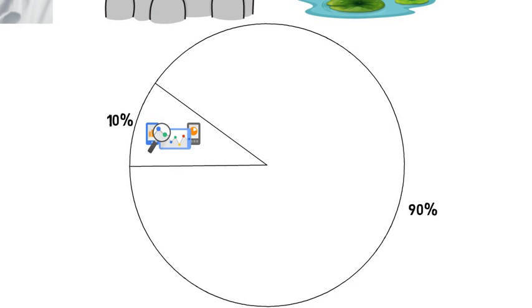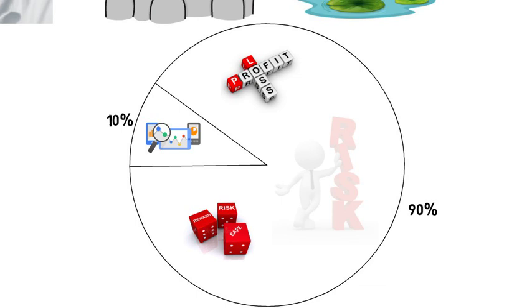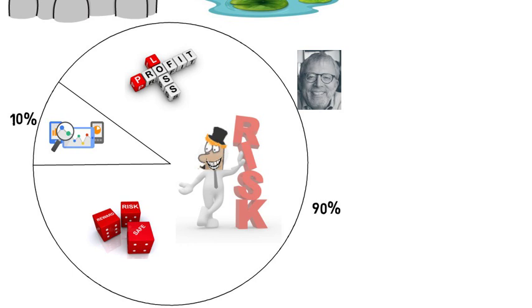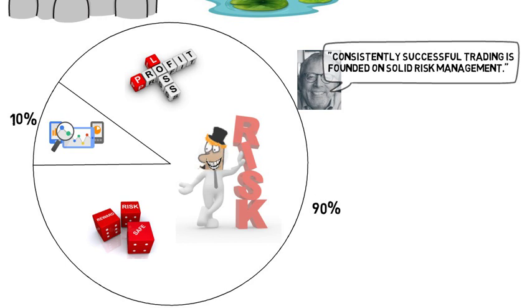Peter understands that identifying a trade is perhaps only 10% of the process. The other 90% is managing the trade after you enter. And when it comes to management, he knows that the name of the game is risk control. This clear message continues throughout the book. He says consistently successful trading is founded on solid risk management.